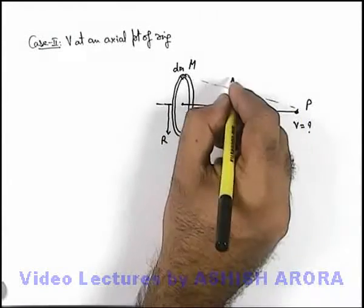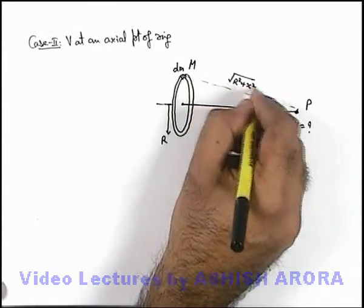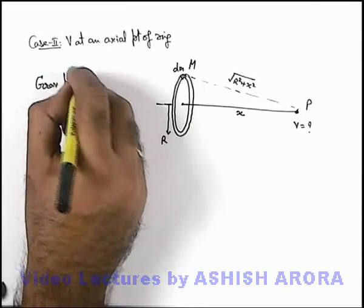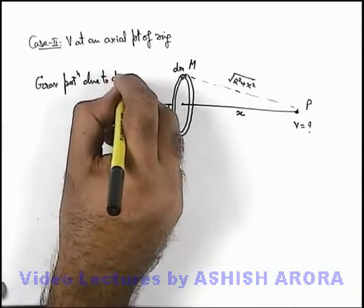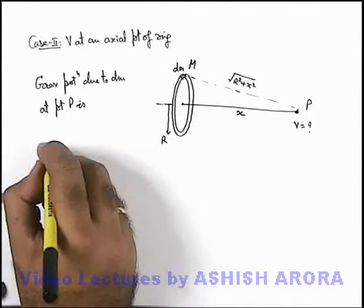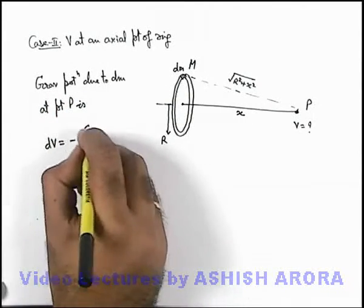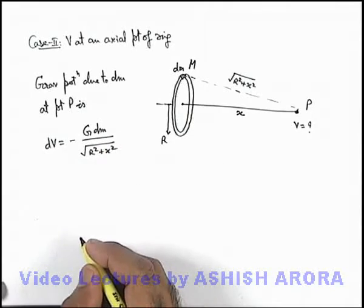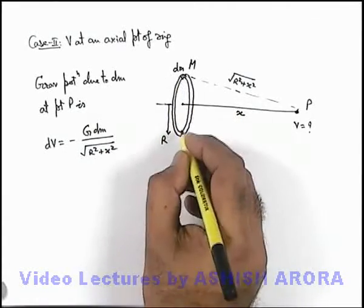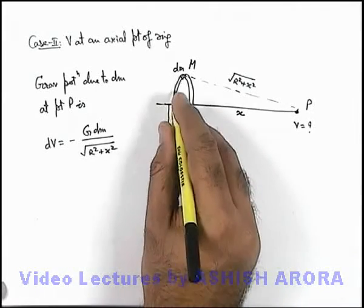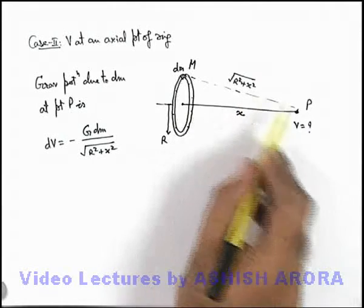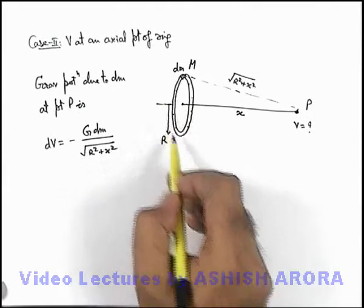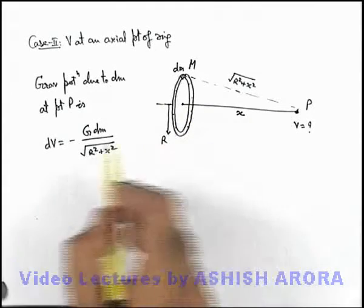If we consider a small element of mass dm on the ring, it will be located at a distance √(r² + x²) from point P. So the gravitational potential due to dm at point P is dV = -G·dm / √(r² + x²). If we integrate the whole expression for the ring, every element or every point on the ring is located at the same distance from point P, so every element dm, no matter where it is on the ring, will produce the same potential.